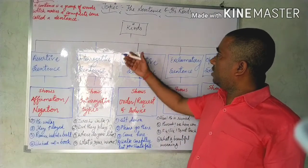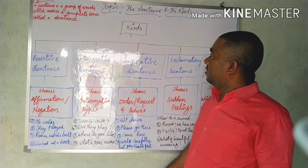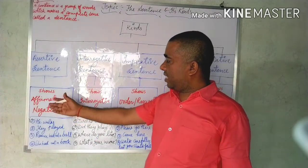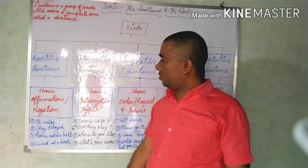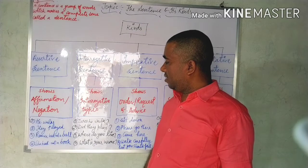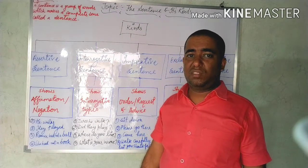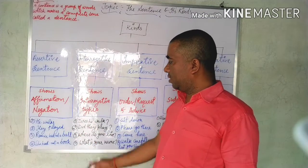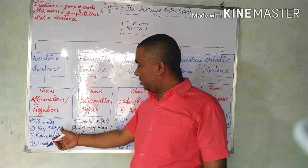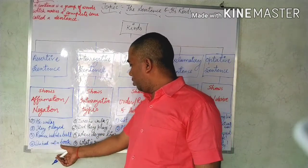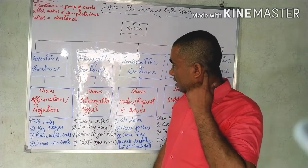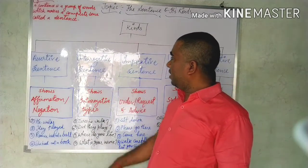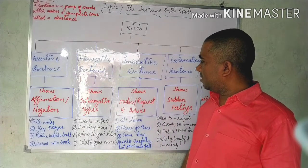Now let's see the kinds. Number one is the assertive sentence. In an assertive sentence, as I have written here, it shows affirmation and negation. In affirmation, we have different types of sentences which give a positive response. As far as negation is concerned, it gives a negative response. Examples: 'He walks,' 'They played' — these show affirmation. 'Ramu had not a boss,' 'She had not a book' — these show negation.